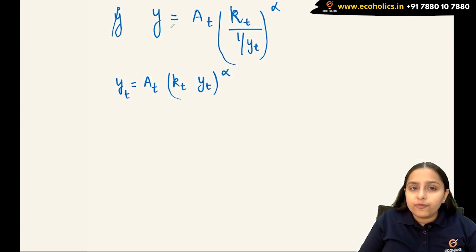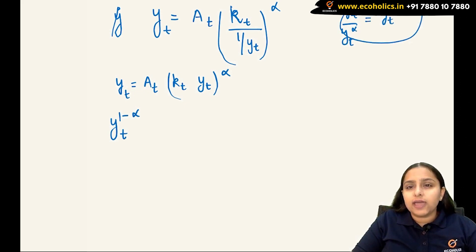Here the power of y is one on the left and α on the right. If this y goes to the other side, it will get divided, and division means subtraction of the power. So y_t^(1-α) = A_t(k_t)^α.